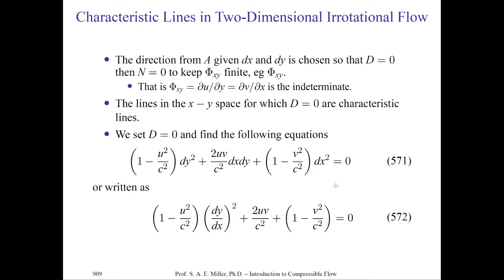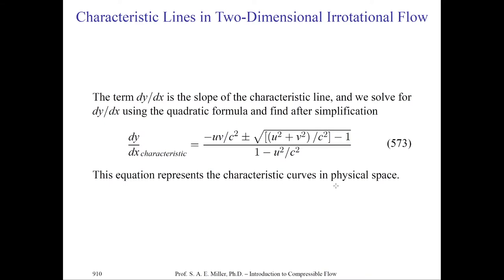Setting D equals zero, we find: (1 minus u²/c²) dy² plus (uv/c²) dx dy plus (1 minus v²/c²) dx² equals zero. We can rewrite this as (1 minus u²/c²)(dy/dx)² plus 2uv/c² plus (1 minus v²/c²) equals zero. The term dy/dx is the slope of the characteristic line. Solving for dy/dx using the quadratic formula and simplifying gives equation 573, which represents the characteristic curves in physical space at all points A relative to the local flow properties.